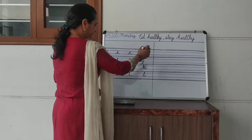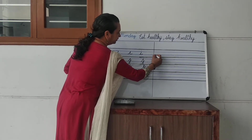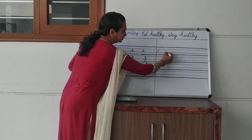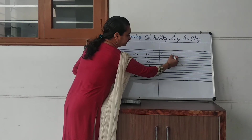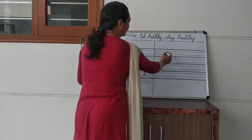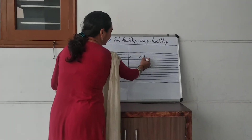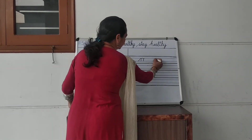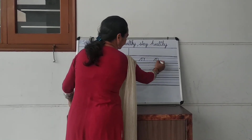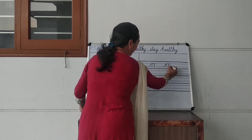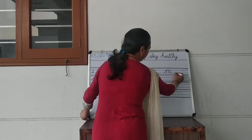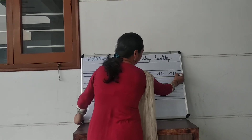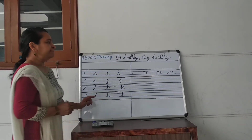Next letter is m. M starts with a slanting line, then you come down to the second blue line and make one turn. Third step: start from the second blue line again. Then m has one curve, two curves, and then a tail. That's m.